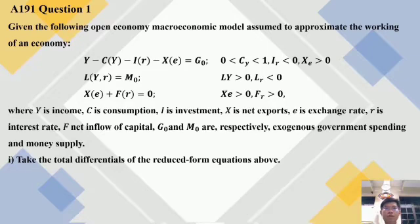Given the following open economy macroeconomic model, assumed to approximate the working of an economy, where Y is income, C is consumption, I is investment, X is net export, E is exchange rate, R is interest rate, F is net inflow of capital, and G subscript 0 and M subscript 0 are the respective exogenous government spending and money supply.